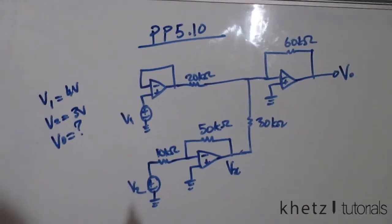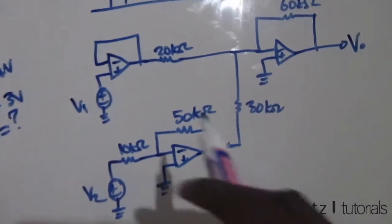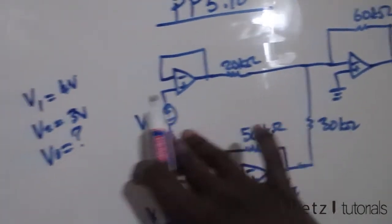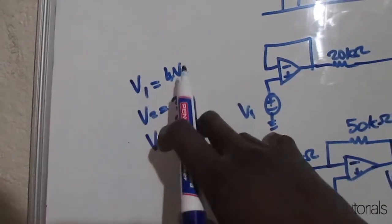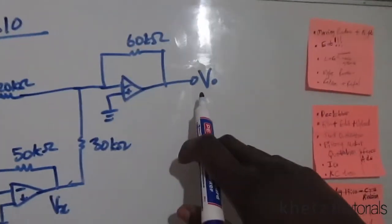Welcome to GAD's Tutorials and in this video I'll be covering practice problem 5.10. Now to start with, we have the values V1 given as 4 volts, we have V2 given as 3 volts and we are asked to find VO which is all the way over here.